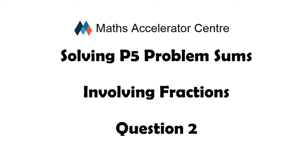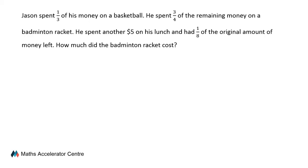This is question 2 in our discussion on solving P5 problem sums involving fractions. Let us start by reading the question. Jason spent one-third of his money on a basketball. He spent three-quarters of the remaining money on a badminton racket. He spent another $5 on his lunch and had one-eighth of the original sum of money left. How much did the badminton racket cost?